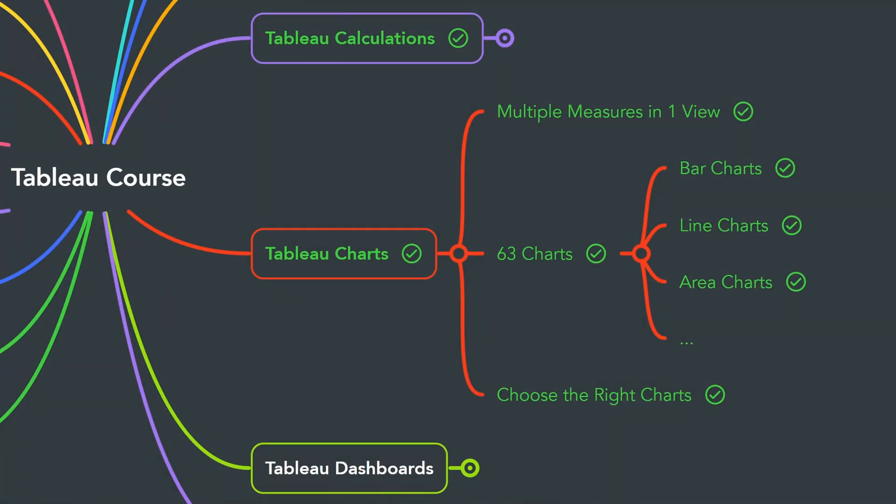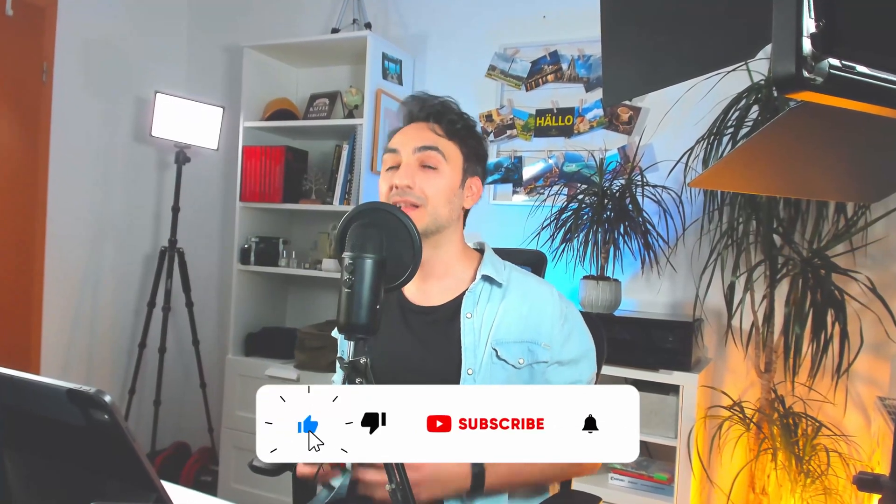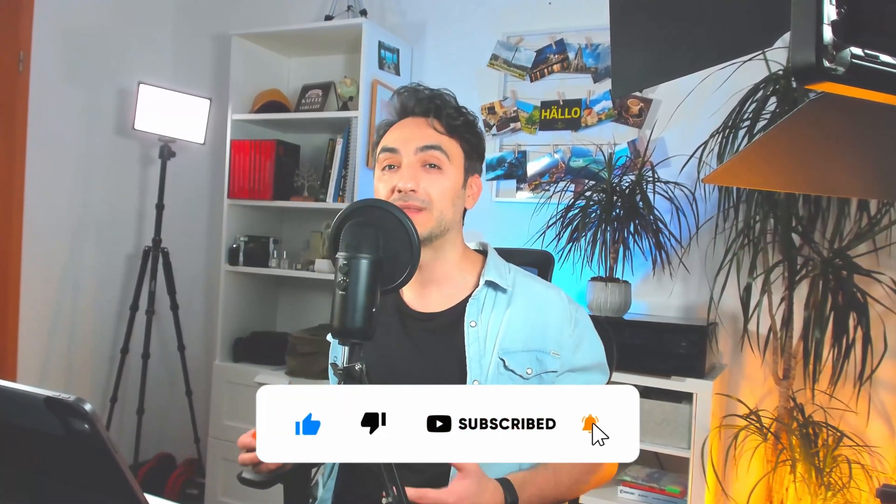Make sure to check the description — I left a link for the visualization cheat sheet, and you'll also find the Tableau file where all charts are sorted under the eight categories. With that, we've learned how to choose the right chart for your requirements and completed the Tableau chart section. In the next section, we'll learn how to create and design dashboards in Tableau. If you like this content, please like and comment — it really helps the YouTube algorithm. Thank you for watching, see you in the next video!